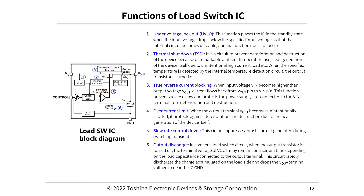Functions of the load switch IC: (1) Under voltage lockout (UVLO) - places the IC in the standby state when the input voltage drops below the specified input voltage so that the internal circuit does not become unstable and malfunction. (2) Thermal shutdown (TSD) - a circuit to prevent deterioration and destruction due to remarkable ambient temperature rise or unintentional high current load; when the specified temperature is detected, the output transistor is turned off. (3) True reverse current blocking - when Vin becomes higher than Vout, current flows back from Vout pin to Vin pin; this function prevents reverse flow and protects the Vin terminal from deterioration and destruction.